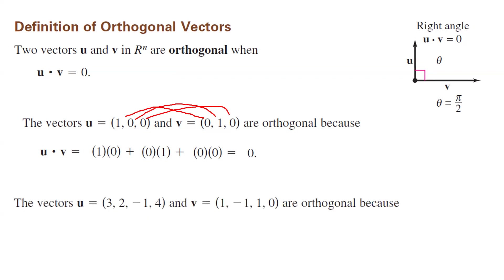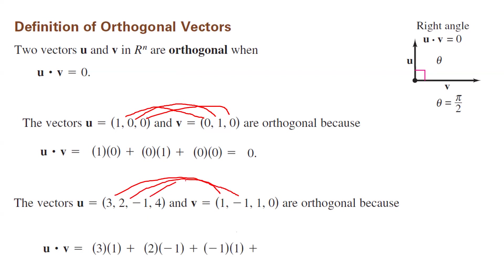Now consider two other vectors. Are they orthogonal or not? First, find the dot product: multiply 3 and 1, then 2 and negative 1, then negative 1 and 1, and finally 4 and 0. Adding these together gives 0, so indeed they are orthogonal.